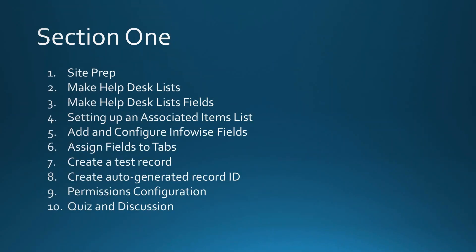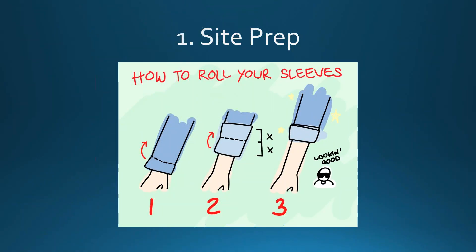In this first section, we're starting from scratch with site preparation. We'll make some lists, set up fields — all regular SharePoint activities — then get into the Ultimate Forms settings, associated items, configuration of Infowise fields, setting fields into tabs, testing with a test record, auto-generate ID, permissions configuration, and then a quiz.